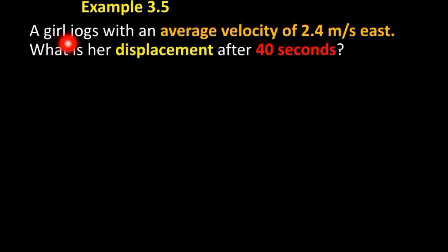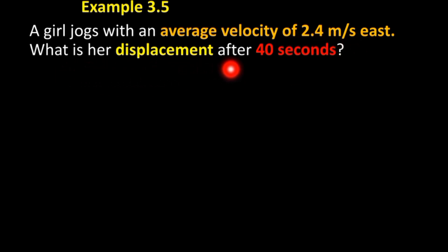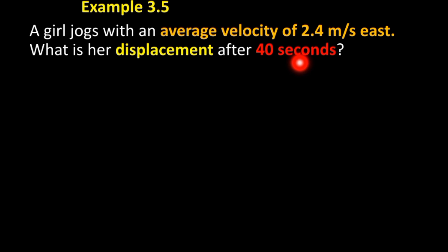Example 3.5: A girl jogs with an average velocity of 2.4 meters per second east. What is her displacement after 40 seconds?